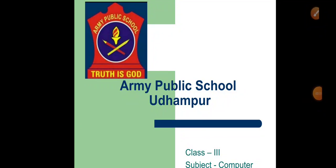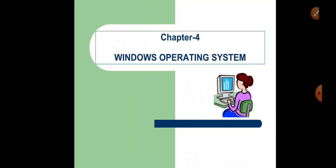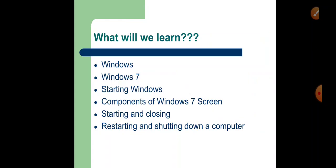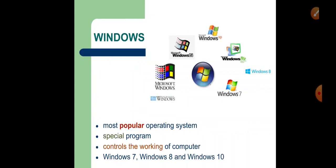Hello, my dear children, welcome back to another class of subject computers. You are now familiar with the operating system software, and in this chapter you will know more about the most commonly used operating system, that is Microsoft Windows. What we will be covering in this chapter is: what is Windows, what is Windows 7, how to start Windows 7, what are the various components of Windows 7, how to start and close an application, and how to restart and shut down a computer.